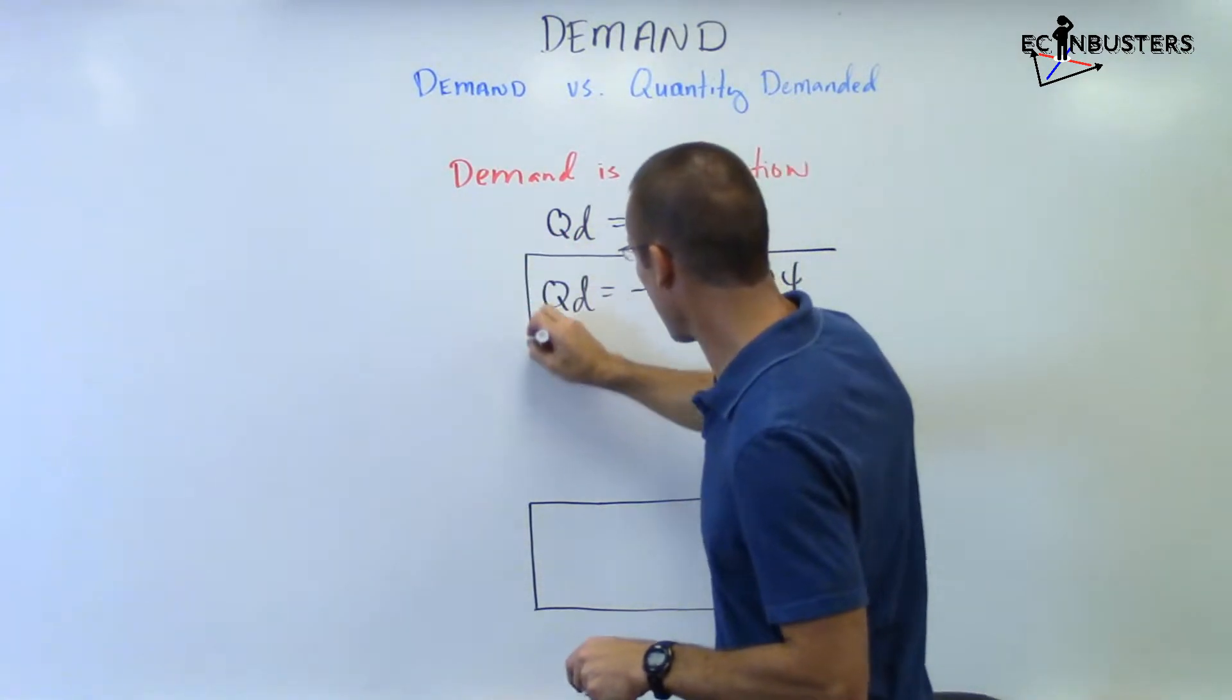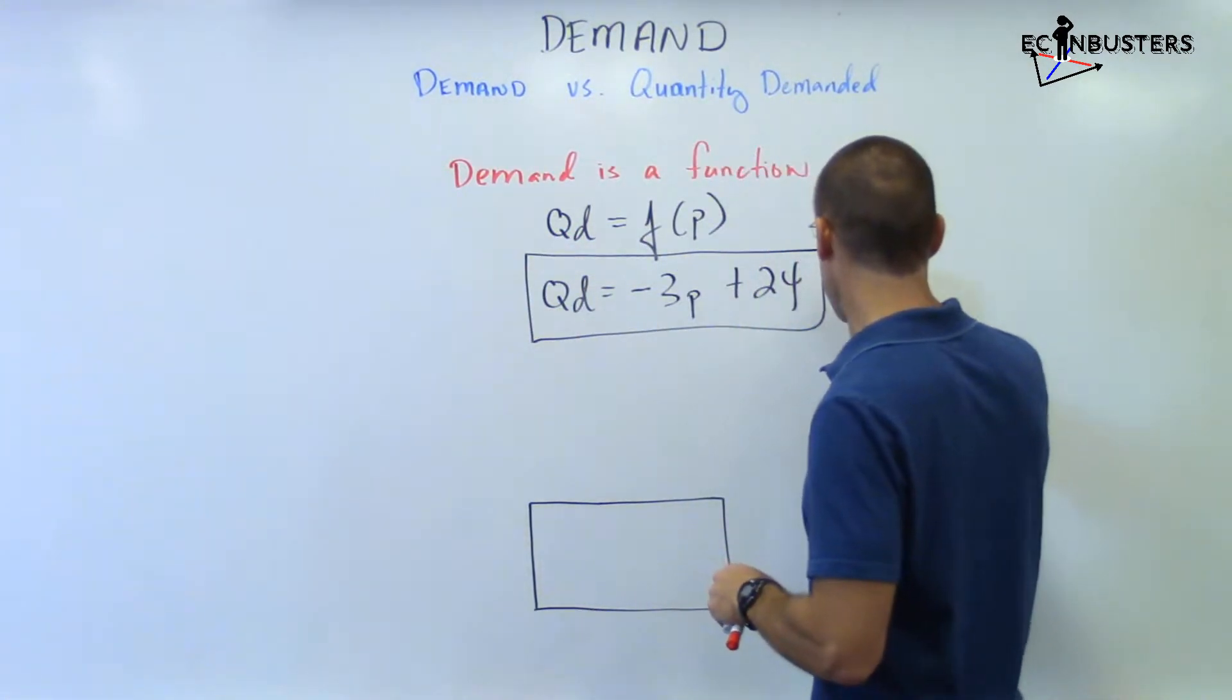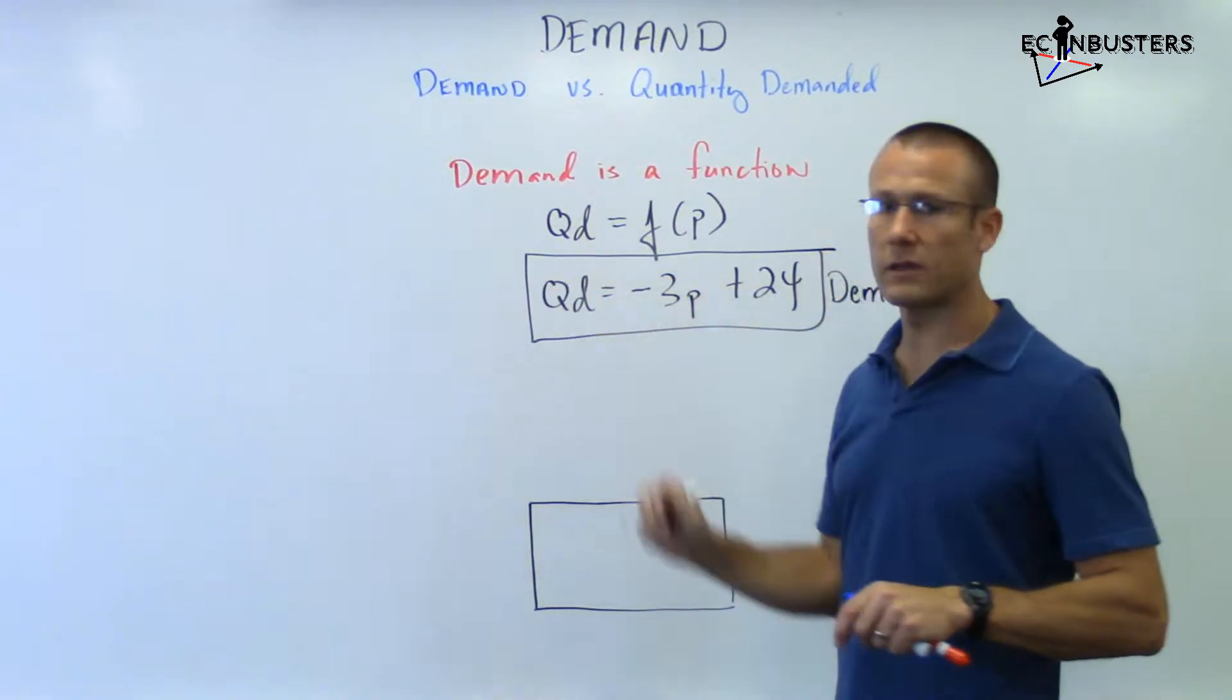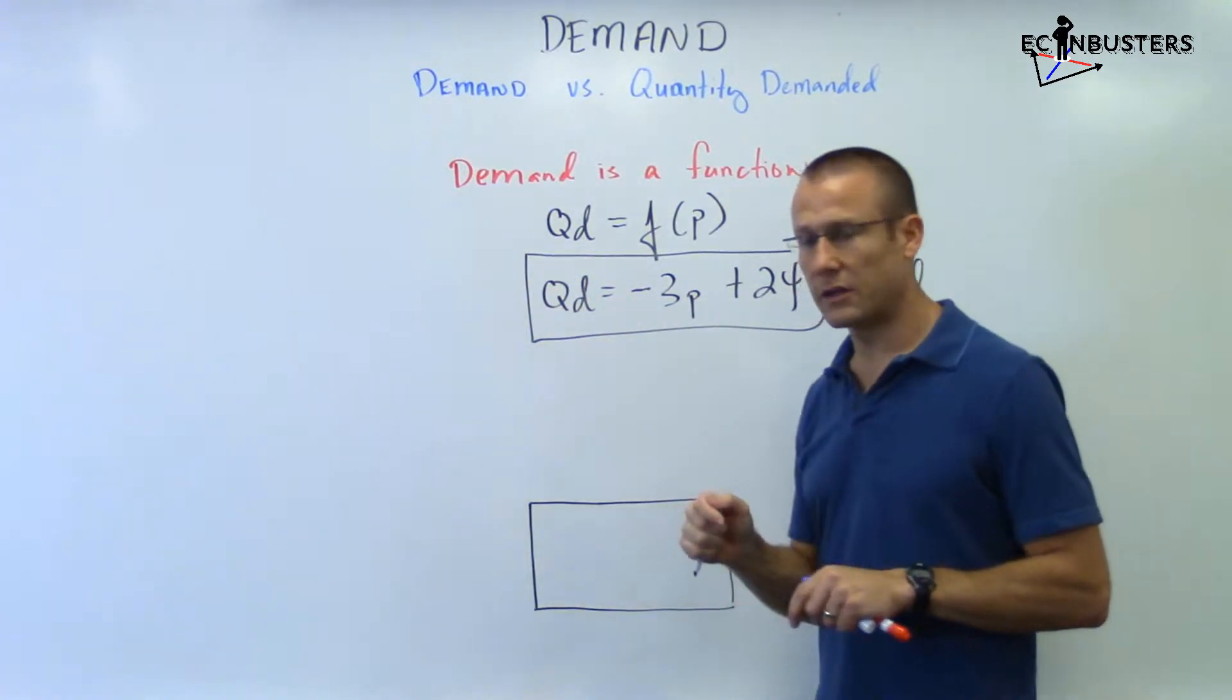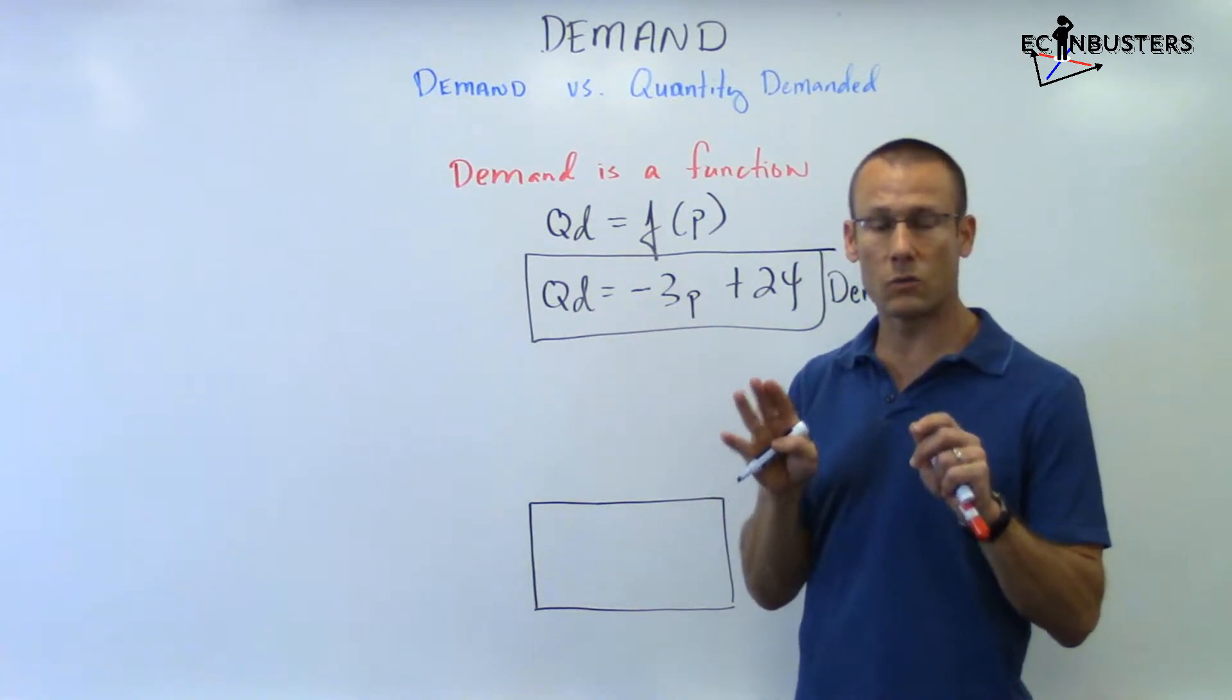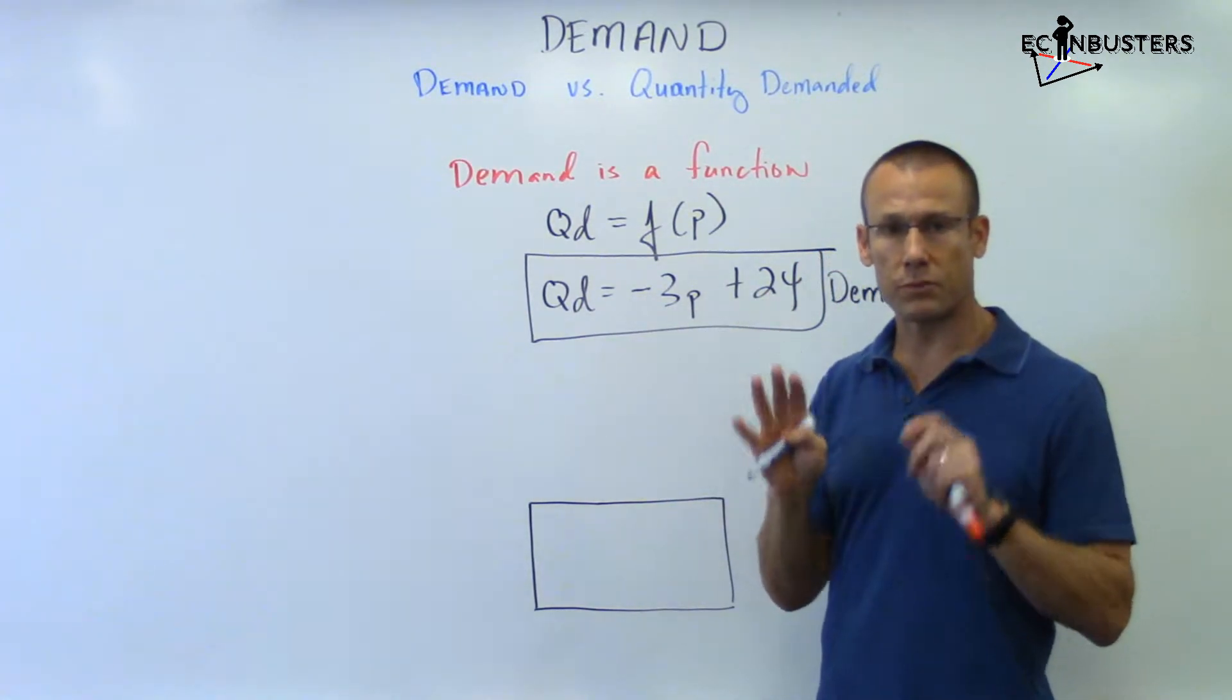This thing right here is a demand function. This whole thing is a demand function. It's telling us what QD, what quantity demanded is going to be at a bunch of different prices.